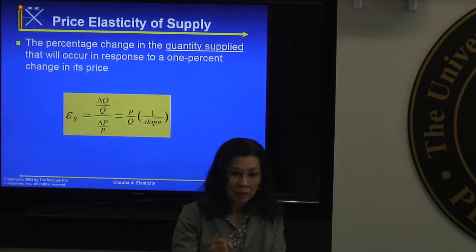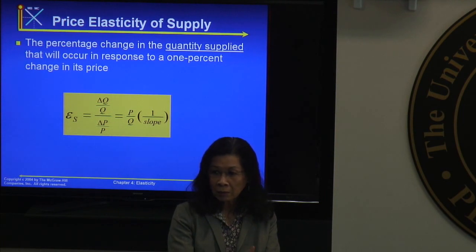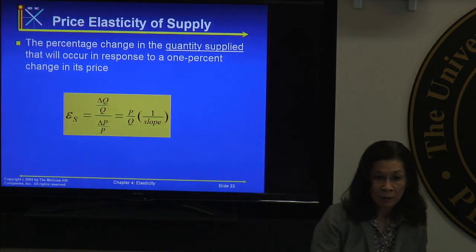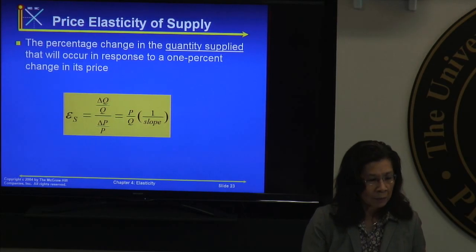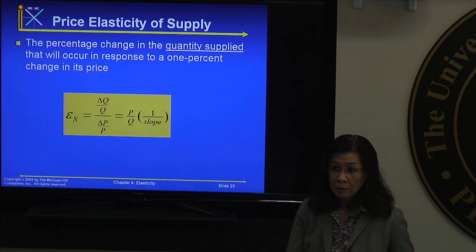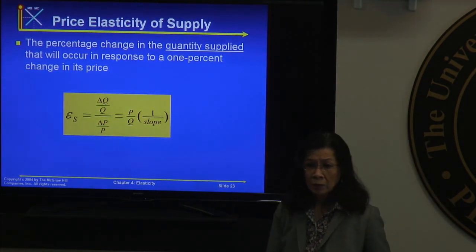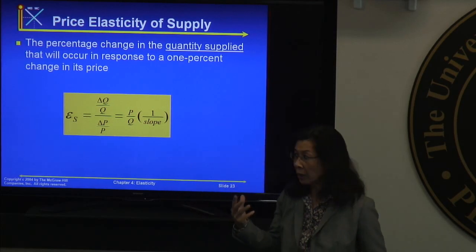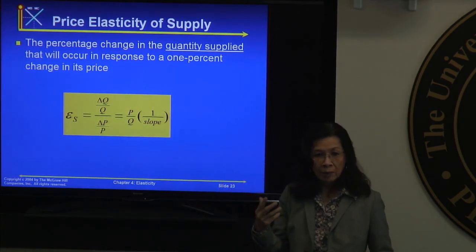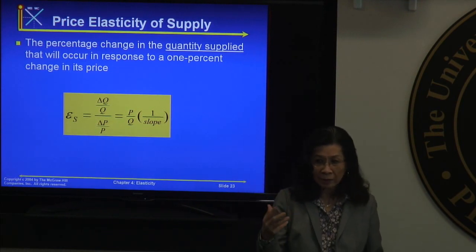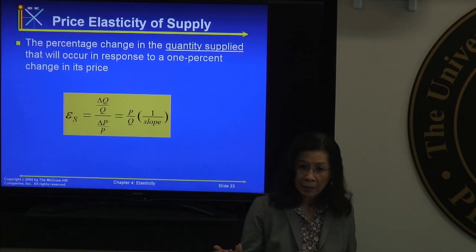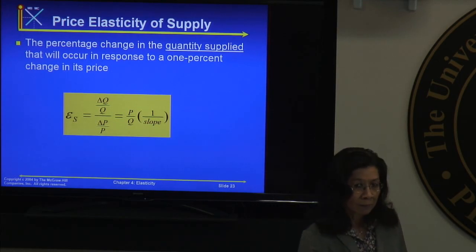Now we're applying elasticity to the supply curve — price elasticity of supply. The formula is the percentage change in quantity divided by the percentage change in price. This tells you how reactive supply is to a price change. For example, if the price increases from $35 to $45 per hundred, there's incentive to produce more — supply moves along the supply curve. The question is how much: is elasticity greater than 1 (elastic), less than 1 (inelastic), or exactly 1 (unit elastic)?